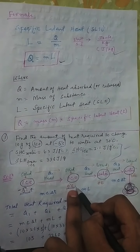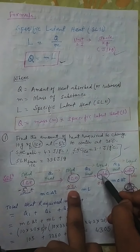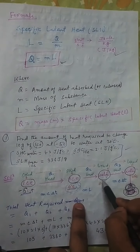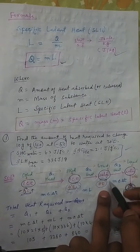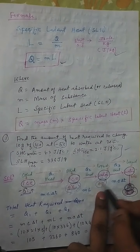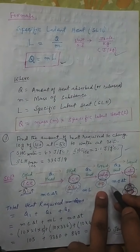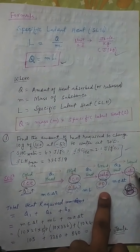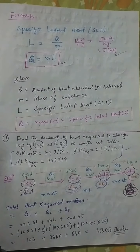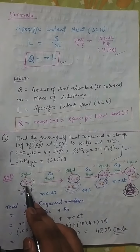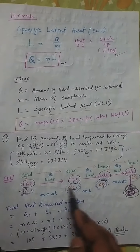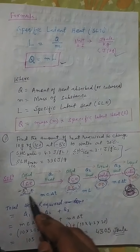Once the ice reaches 0 degrees centigrade, it is ready to convert into water — this is a change of state. The ice is converted into water while the temperature remains unchanged at 0 degrees centigrade. Then, by continuous supply of heat, this water changes its temperature to 20 degrees centigrade. Only temperature changes in this final stage.